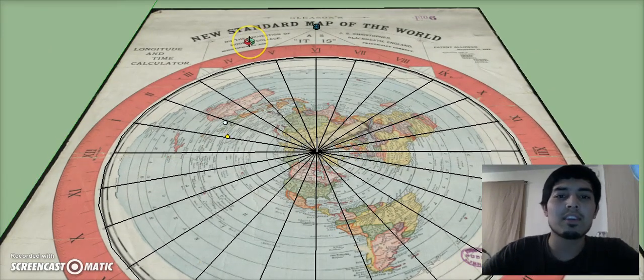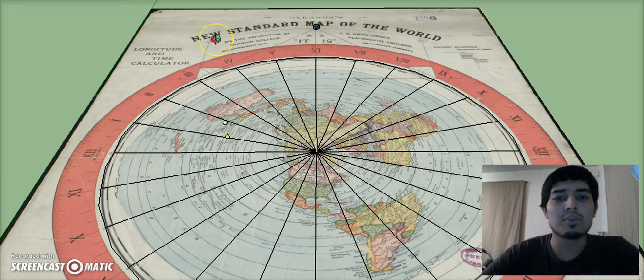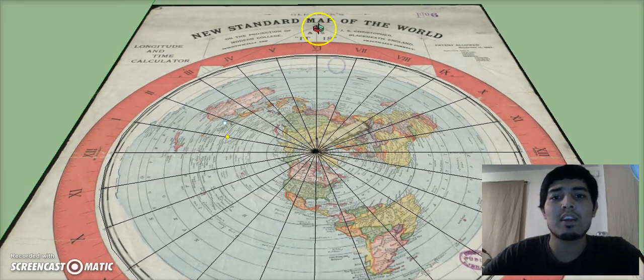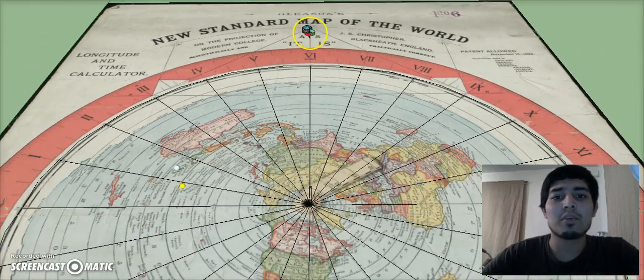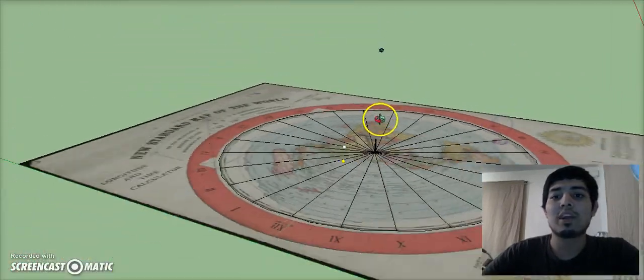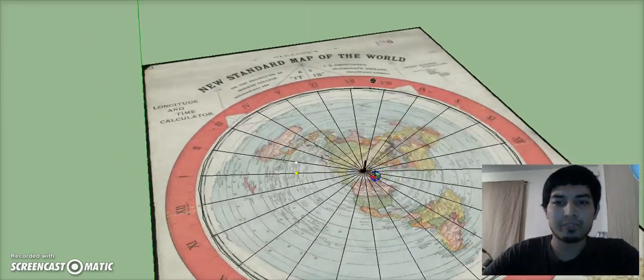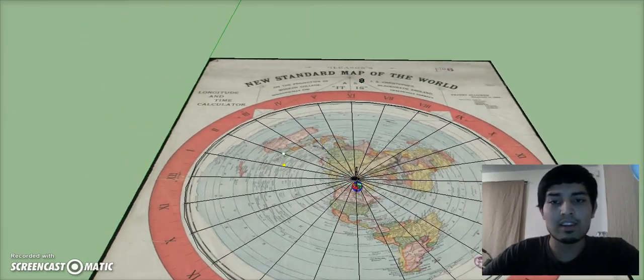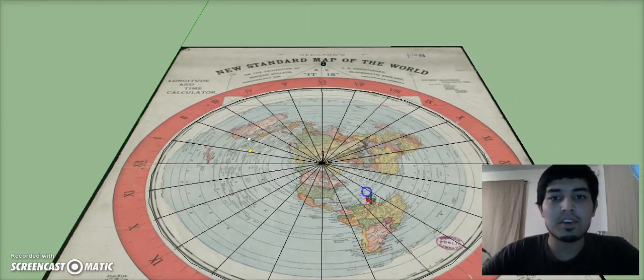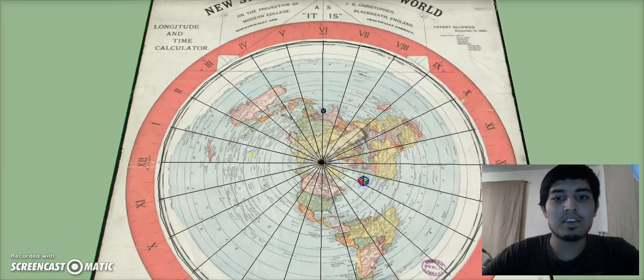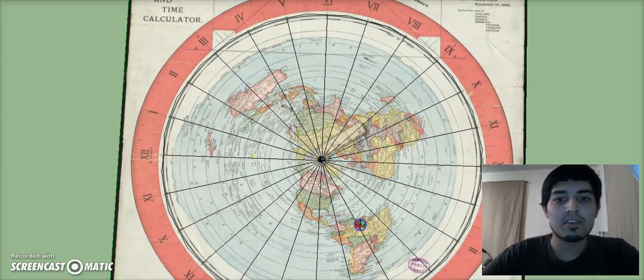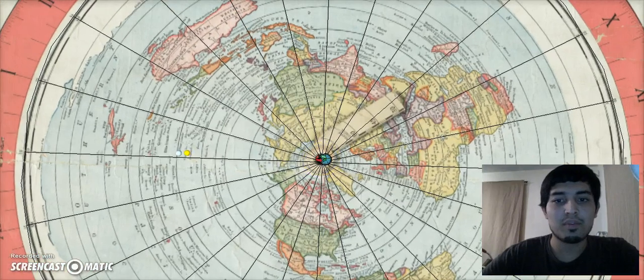Also, when I first saw this Gleason's 1892 azimuthal equidistant projection, I didn't really understand what these stars meant. It wasn't until I made this model and aligned Polaris with that top star that it began to make a lot more sense that it's directly above, kind of like the Dakota map. Here is the 28-day cycle as seen from above.